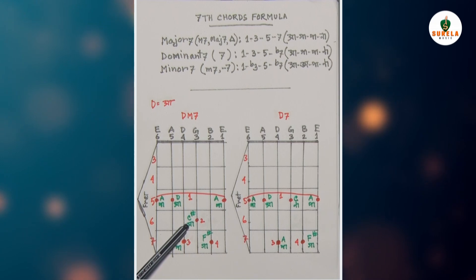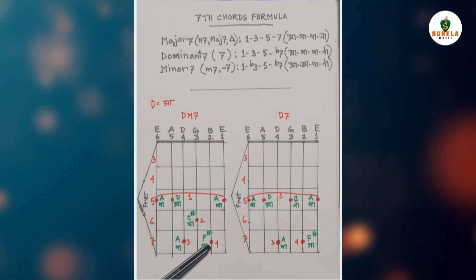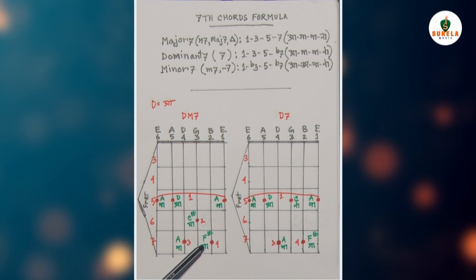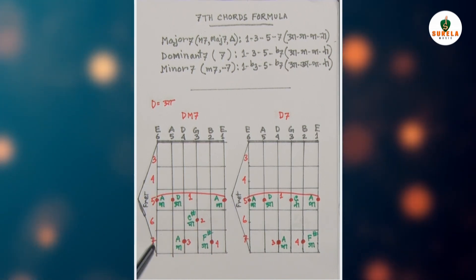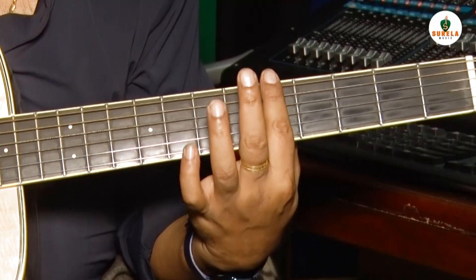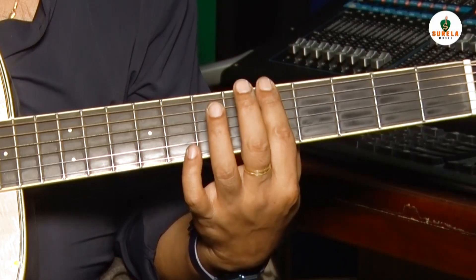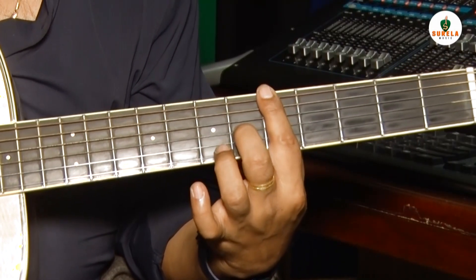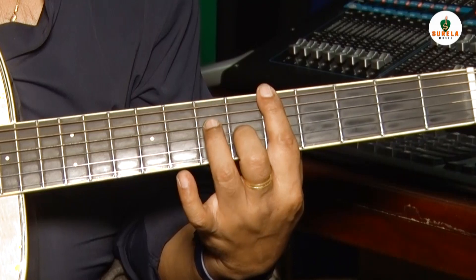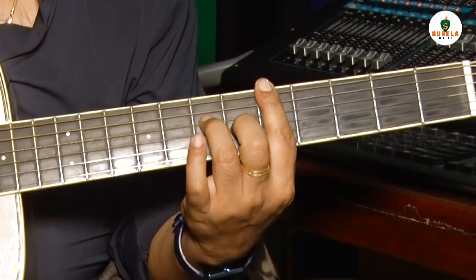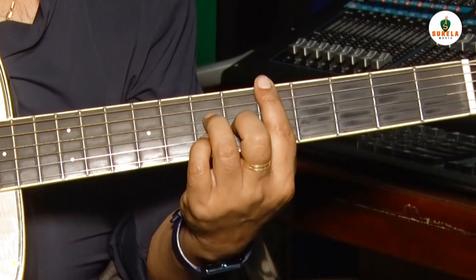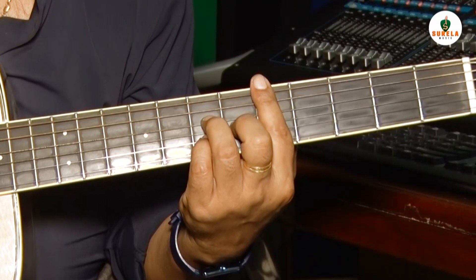D major 7th chord: 1st finger D, 5th fret, 2nd string. 3rd string, 6th fret, middle finger. 4th string, 7th fret, 3rd finger. 2nd string, 7th fret, 4th finger. F sharp note হচ্ছে। এটাই হচ্ছে D major 7th chord।